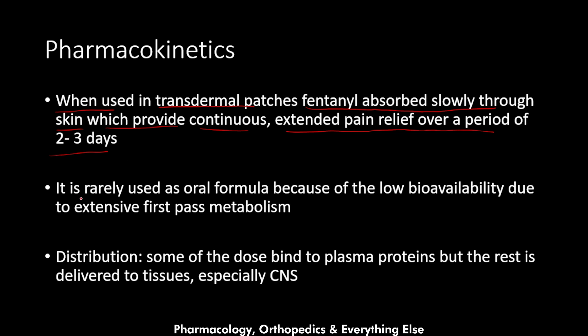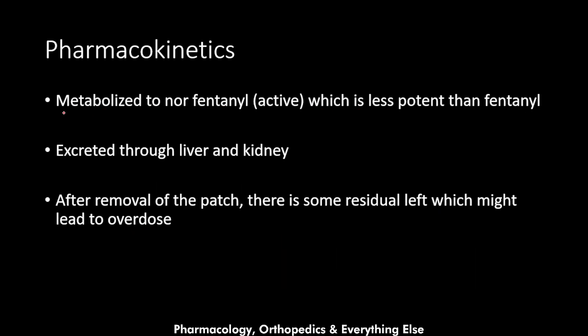Fentanyl is rarely used as an oral formulation because of its low bioavailability due to extensive first-pass metabolism. For distribution, some of the dose binds to plasma proteins while the rest is delivered to tissues, especially the CNS, because it easily passes through the blood-brain barrier. It is metabolized to norfentanyl, which is an active but less potent metabolite, and excreted through the liver and kidneys. After removal of the patch, residual fentanyl remaining in the skin may still enter circulation and cause overdose.